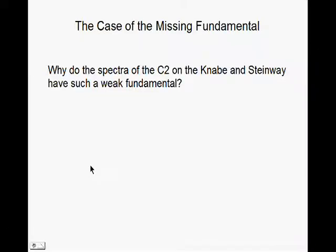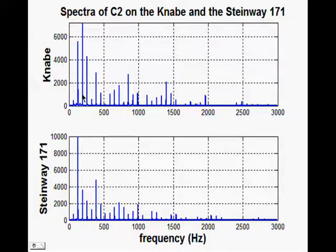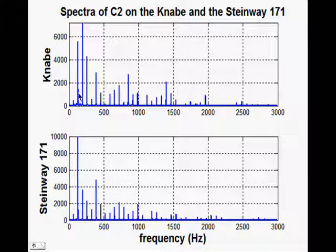The case of the missing fundamental. Why do the spectra of the C2 on the Kawai and the Steinway have such a weak fundamental? In a previous YouTube video I compared the C2 note and noticed that the fundamental on both pianos was not well represented power-wise. However, the harmonics were all set up based on that fundamental, and it also gave a sound strongly in the fundamental area. So let's see why that might be the case.